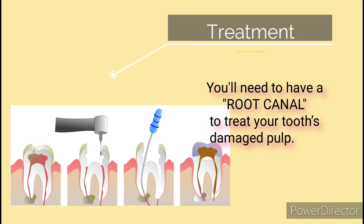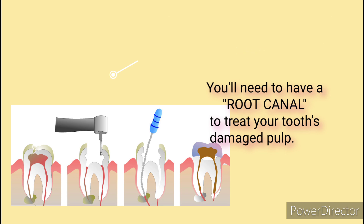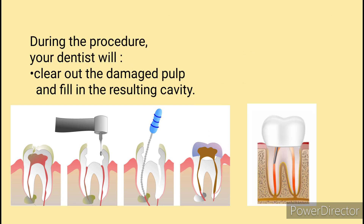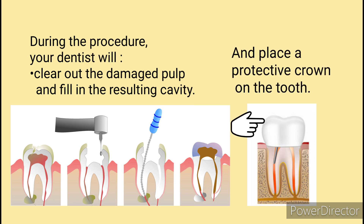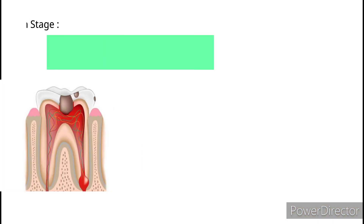Treatment: you'll need to have a root canal to treat your tooth's damaged pulp. During the procedure, your dentist will clear out the damaged pulp, fill in the resulting cavity, and place a protective crown on the tooth.